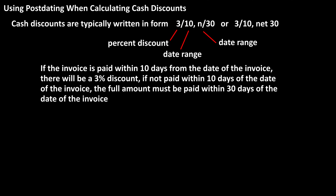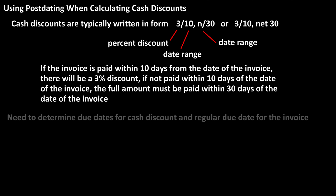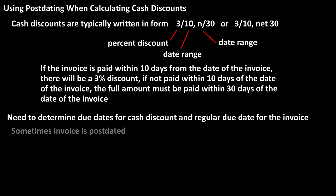To determine whether cash discounts are earned and the actual due date of the invoice, we need to calculate the due date for the cash discount and the due date of the invoice. Sometimes an invoice is post-dated to give the purchaser more time to take the cash discount. This is often labeled as 'as of'. Let's go through an example of determining these dates with a post-dated invoice.